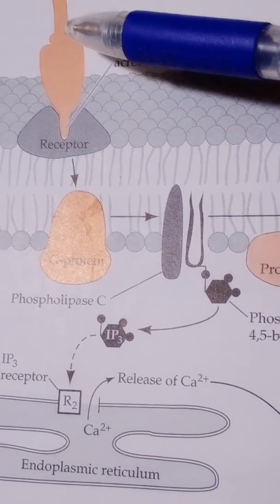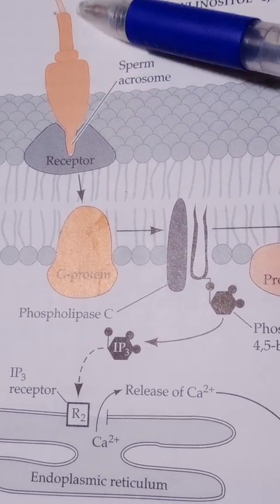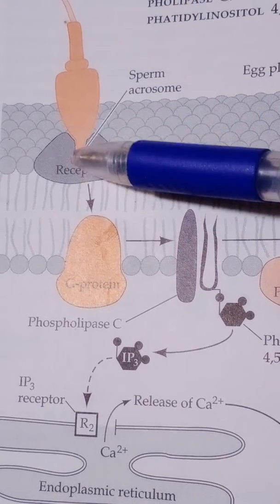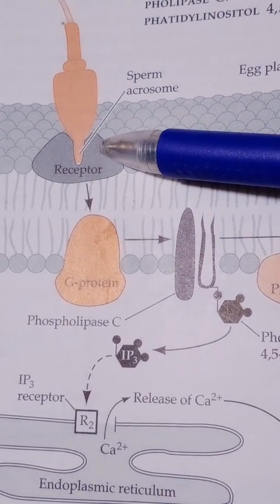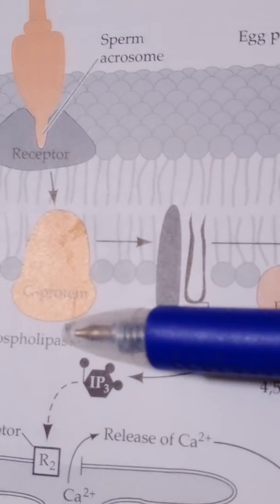You can see here the sperm, this is the head of the sperm. As it enters into the plasma membrane partly, the receptors receive it. Okay, a message is sent to the G protein. Here you can see the G protein.